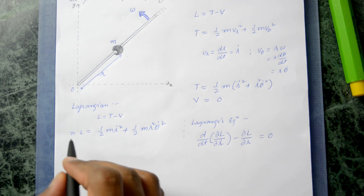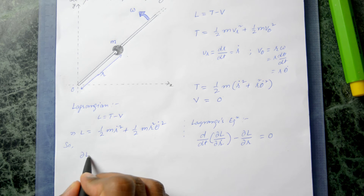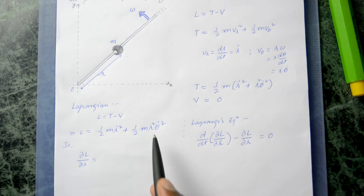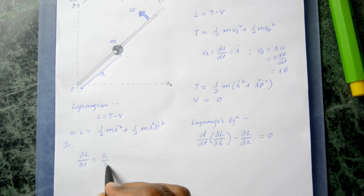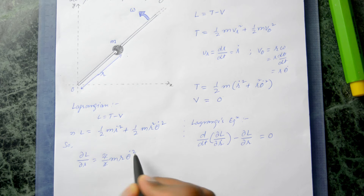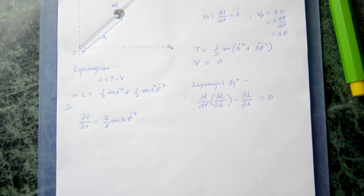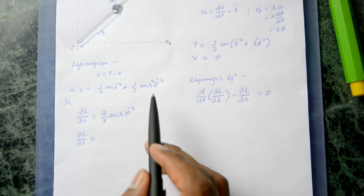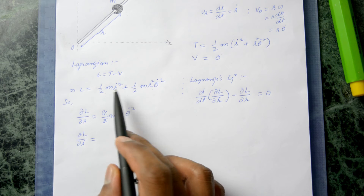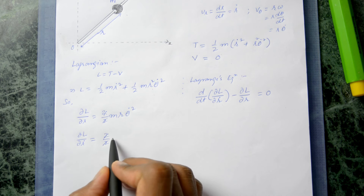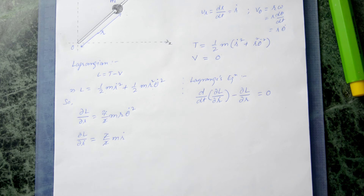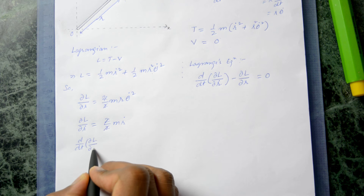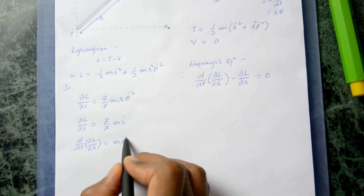Computing the partial derivatives: ∂L/∂R = m·R·θ̇² (from the second term), and ∂L/∂Ṙ = m·Ṙ (from the first term). Therefore d/dt(∂L/∂Ṙ) = m·R̈.